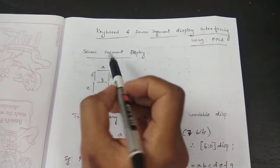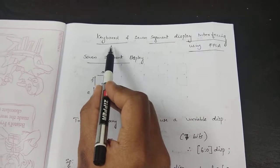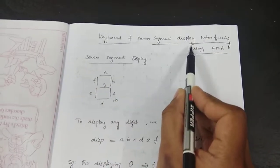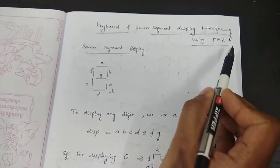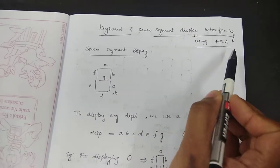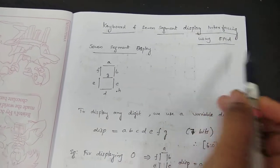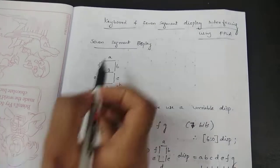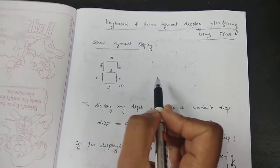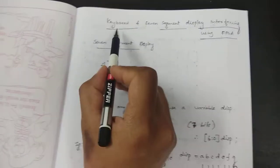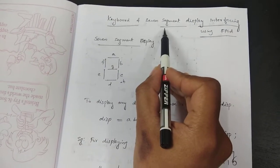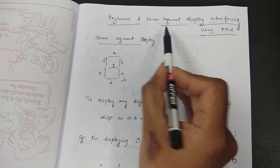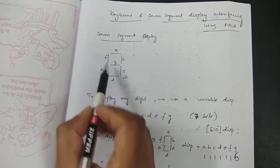Our first interfacing experiment is keyboard and seven segment display interfacing using our FPGA board. We have to first learn about two elements: one is a keyboard and the other one is a seven segment display.